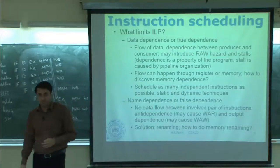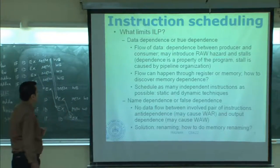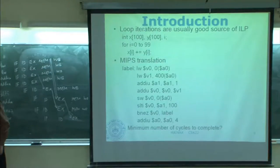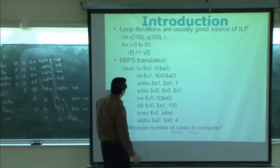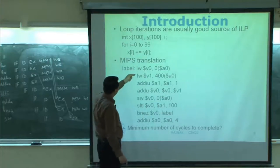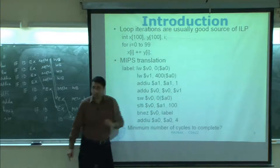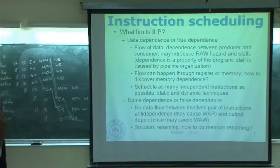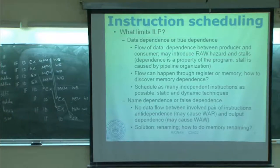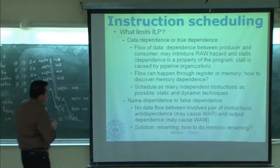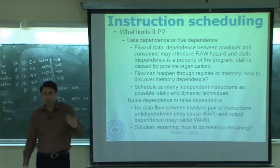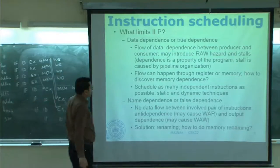Dependencies may not always cause a stall — that is very important to understand. Data flow can happen through register or memory. In this example we see flow through registers: for example, the value flows from one instruction to another through dollar v0. But you can also have data flow through memory — if you store something to memory and later read that value through a load instruction, that establishes a memory dependence.